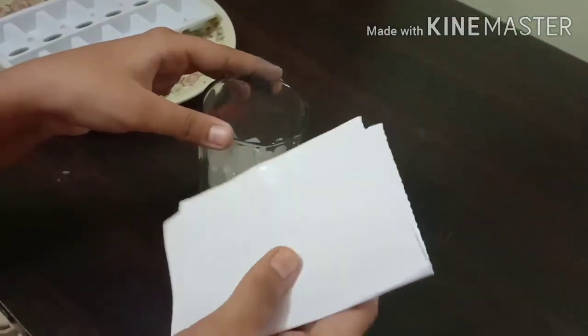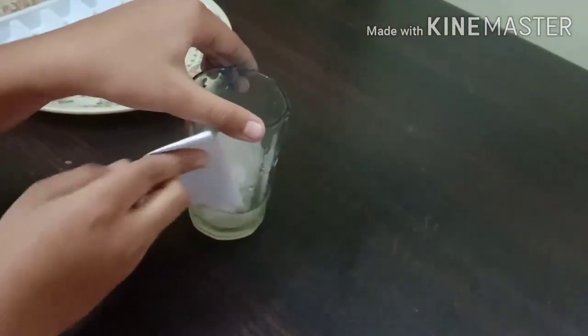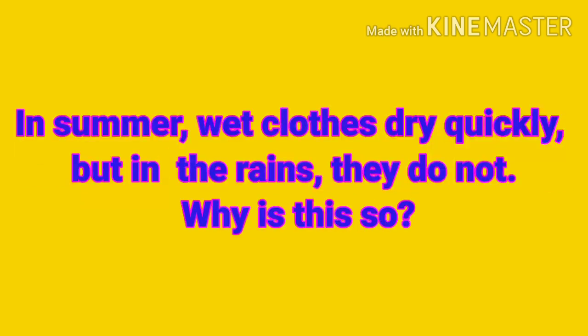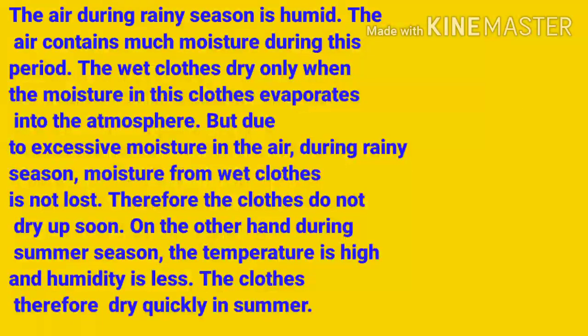In the afternoon when the temperature of air is high, the capacity of air to hold moisture also increases. Compared to its full capacity, the proportion of moisture in the air is less, and we feel that the air is dry. In summer, wet clothes dry quickly, but in the rains they do not. During the rainy season the air is humid and moisture from wet clothes cannot easily evaporate into the atmosphere, so clothes don't dry soon. During summer, the temperature is high and humidity is less, so clothes dry quickly.